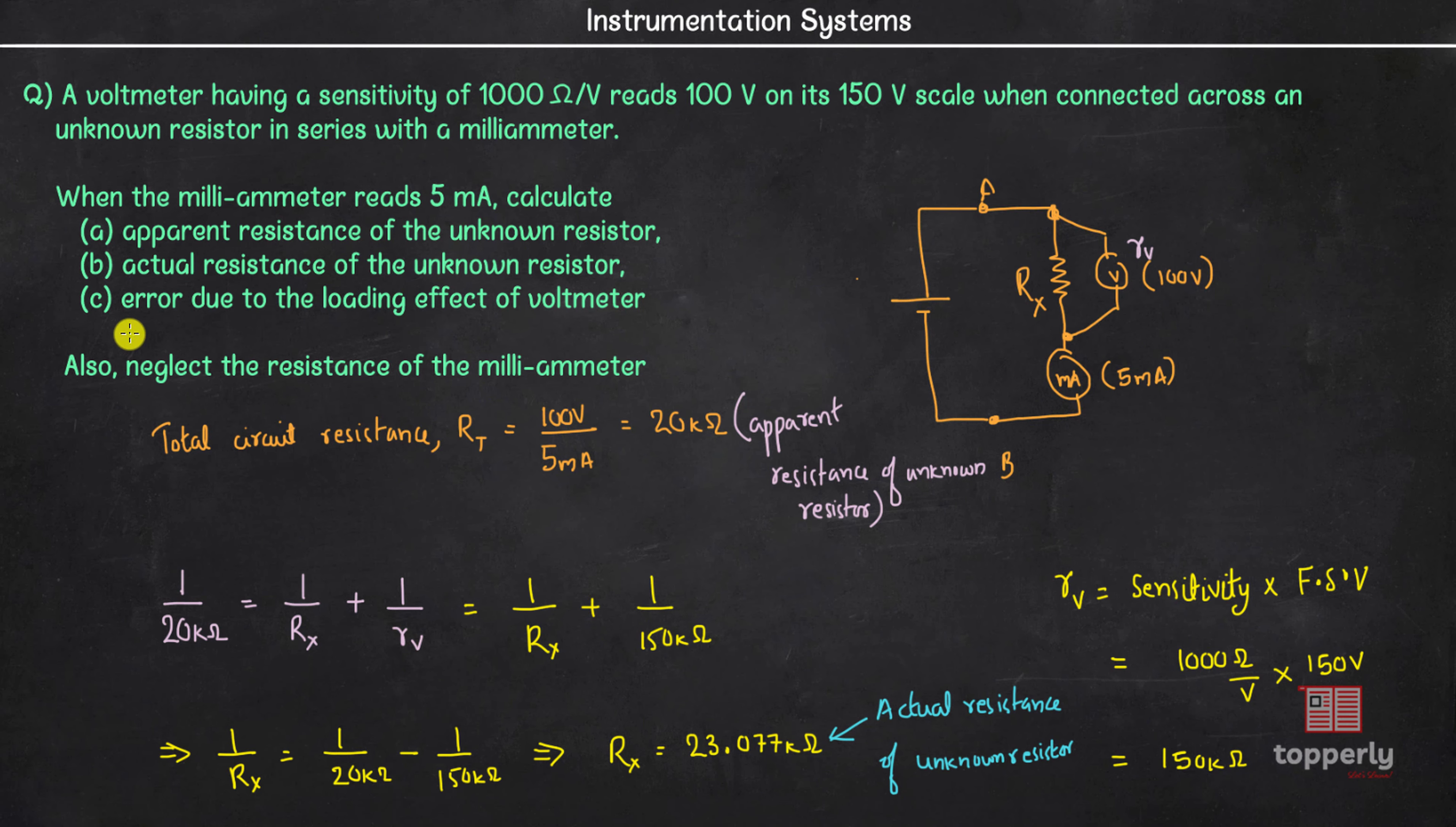Now the third part of the question is find the error due to loading effect of the voltmeter. We know that percentage error due to loading effect of the voltmeter is equal to measured value minus true value by true value into 100, which is equal to 20 kOhm minus 23.077 kOhm by 23.077 kOhm. So this is the error due to loading effect.